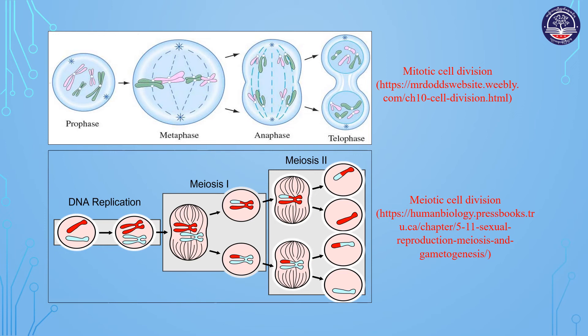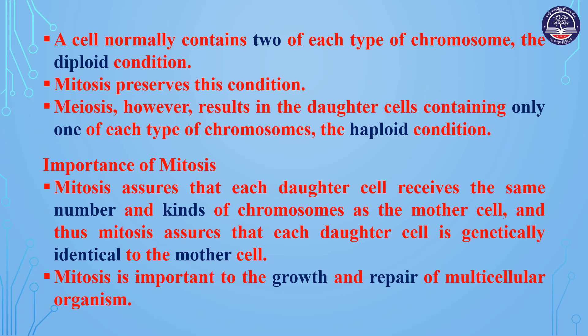A normal cell contains two of each type of chromosome — the diploid condition.